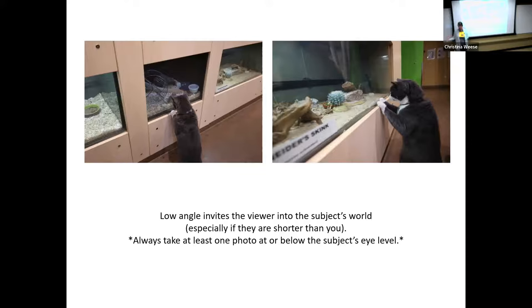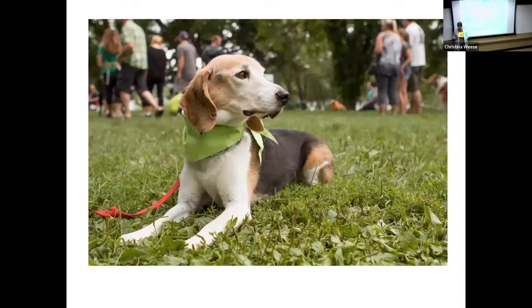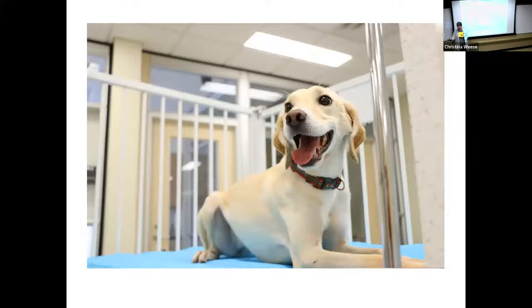A low angle invites the viewer into the subject's world, especially if they're shorter than you. Kids, pets, cats, dogs. If you were taking photos of this subject, you want to get down on their eye level and shoot down there. Here's another example of being down at their eye level, taking a photo. And another one in the park. This is down below, obviously, the cow's eye level, but sort of the worm's or grass-eye view. There's another one of the same dogs shot from below, looking up. And it just gives her a completely different emotional feel to the same set of photos.